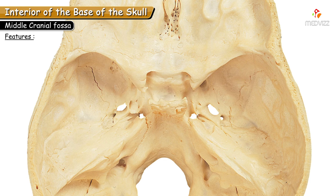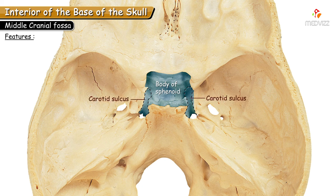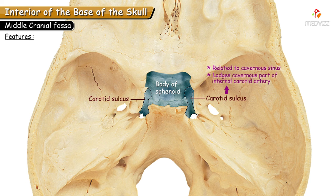On each side, the body of the sphenoid is related to a faint groove called the carotid sulcus, observed as a shallow groove on each side. This groove is related to the internal carotid artery along with its sympathetic plexus. The importance of this groove is that it is related to the cavernous sinus — it forms part of the cavernous sinus. The cavernous part of the internal carotid artery is present in this carotid sulcus.